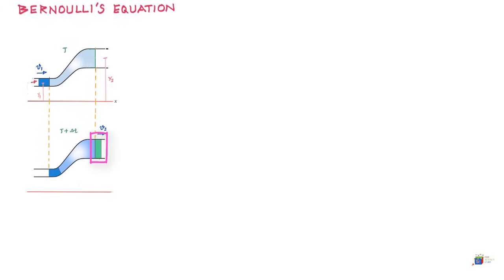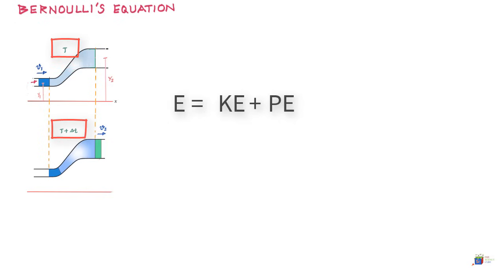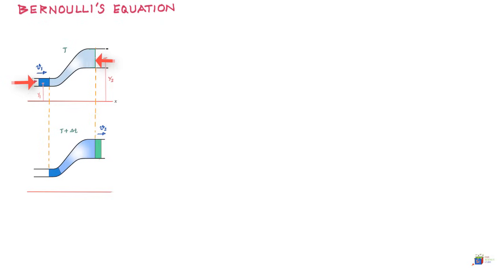Coming back to our situation at time T plus delta T, a part of the liquid has moved forward and an equal volume has moved forward on the other side of the pipe as well. We will make use of the energy conservation principle to establish Bernoulli's equation. The total mechanical energy of the fluid — the sum of kinetic energy and potential energy — is changing between time T and T plus delta T because there are certain forces acting on the liquid and work is being done on the fluid.